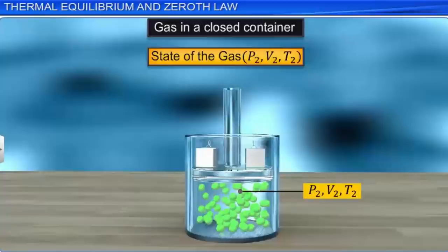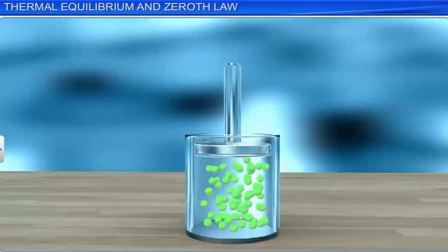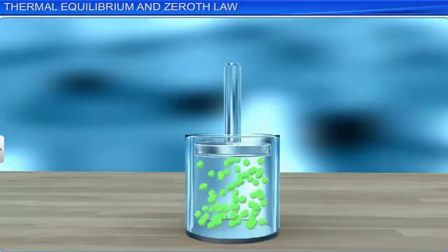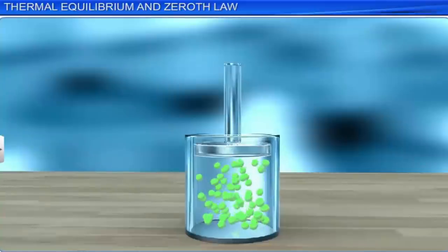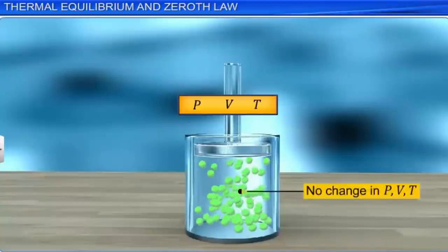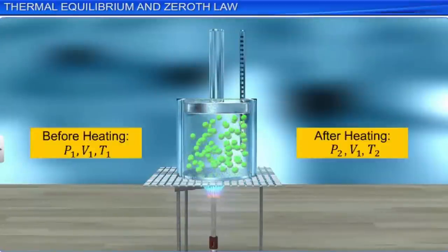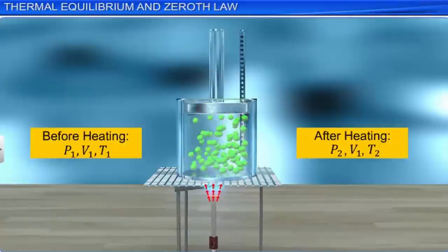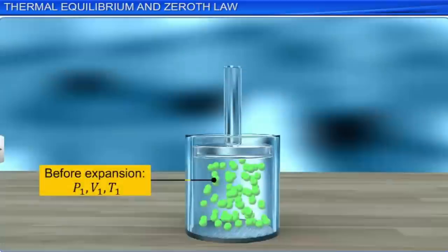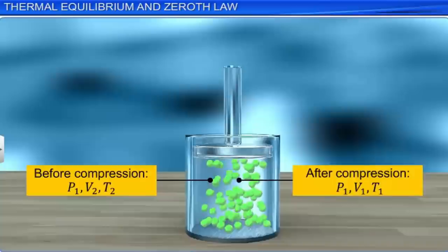The state is said to be in equilibrium if there is no change in any of the macroscopic variables that distinguish the state with time. A system of gas in a container is said to be in equilibrium state if the pressure, volume, and temperature of the gas do not vary with time. The state of a system changes if the system exchanges heat with its surroundings or when work is done by or on the system.